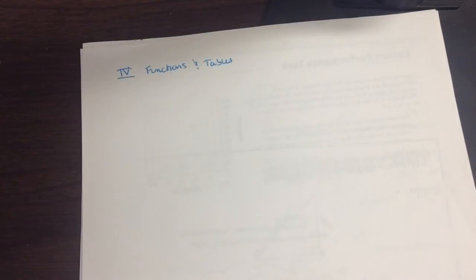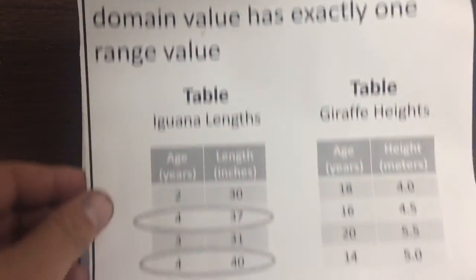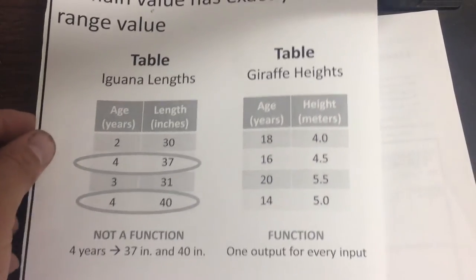The next thing to talk about is functions and tables. How can we tell if something or if a relationship is a function just by looking at the table? So in part A, what I want you to do is copy down these two tables.